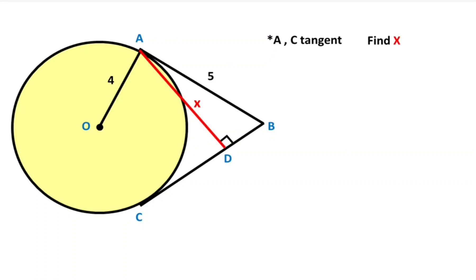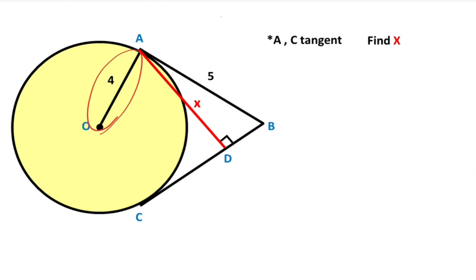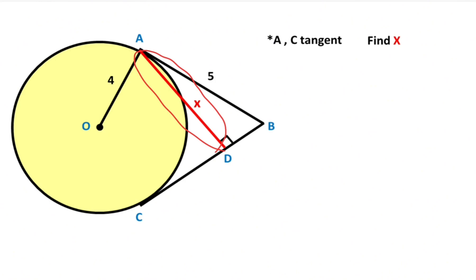We have one circle with center point O. Points A and C are given as tangent points, and the radius of the circle is given as four units. This length is given as five. The question is: what is the length of x? First, draw a perpendicular line onto the chord like this.